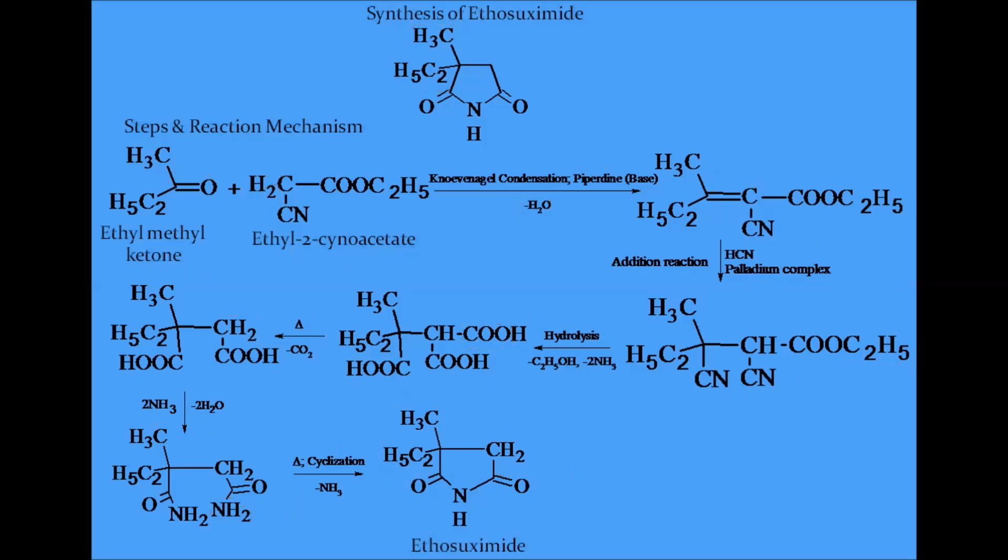If we summarize the synthesis of ethosuximide: ethyl methyl ketone and ethyl 2-cyanoacetate are reacted in the presence of piperidine and form this intermediate. Then by addition of SCN in the presence of palladium complex, this intermediate is formed. By hydrolysis, ester bond is converted into the acid and CN is converted into the acid.